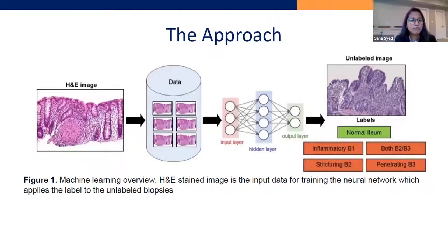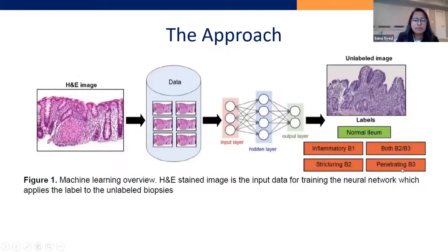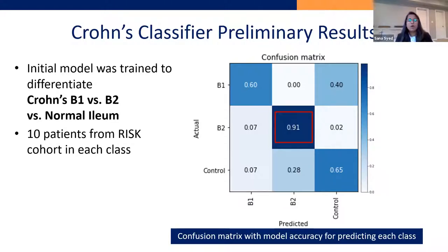Same approach: we feed in H&E biopsies for a training dataset, train off normal, B1, B2, and B3, and then predict off unlabeled biopsies. We found in our initial models that we were really good at predicting stricturing disease, B2. To give context: currently at the time of diagnosis, when you get biopsies in patients with Crohn's disease, all we can say using H&E biopsies is that you have Crohn's versus not. So everybody gets the same treatment — the same algorithmic treatment pathway — versus a precision medicine route, which is really what data science aims for and what we've already achieved in diseases like cancer.